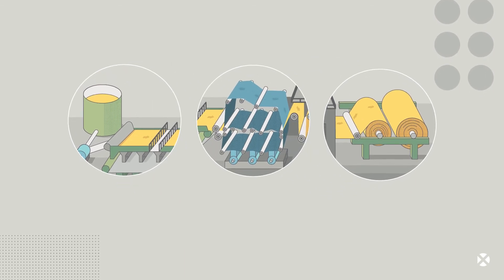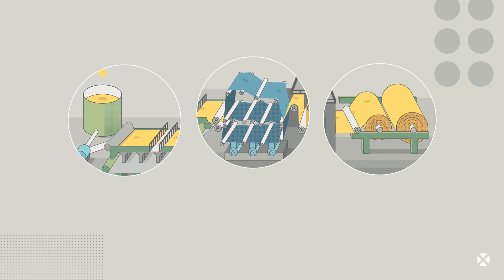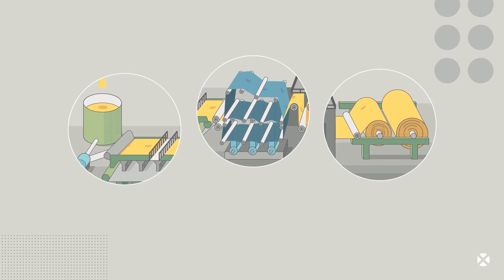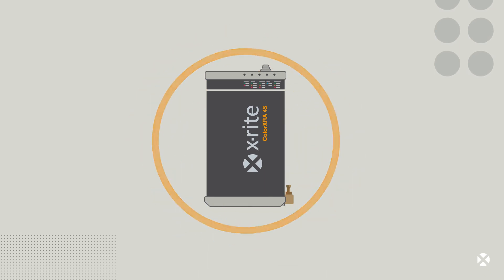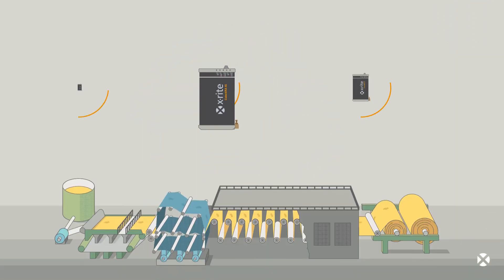And laminated paper is measured between the press and the dryer section to ensure you get results that correlate to the laboratory during QC. An X-Rite inline system positions a non-contact spectrophotometer in a custom frame over the production line at critical points.